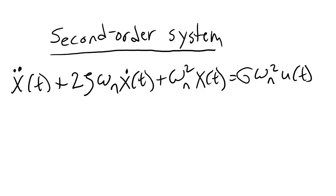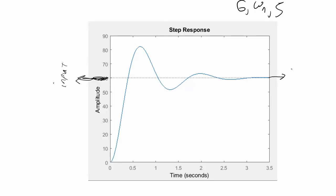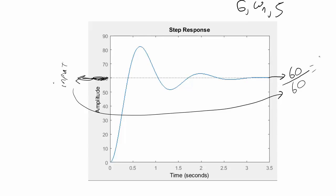Now let's look at how we find the values for the constants for a second order system. Here we have three constants to find: zeta the damping ratio, omega_n the natural frequency in units of radians per second, and the gain g. The gain we find in the same way as for the first order system — we take the steady state value of the output and divide it by the input value. Next, let's look at how we could find the value of zeta, the damping ratio. We can find this from the overshoot using this equation.